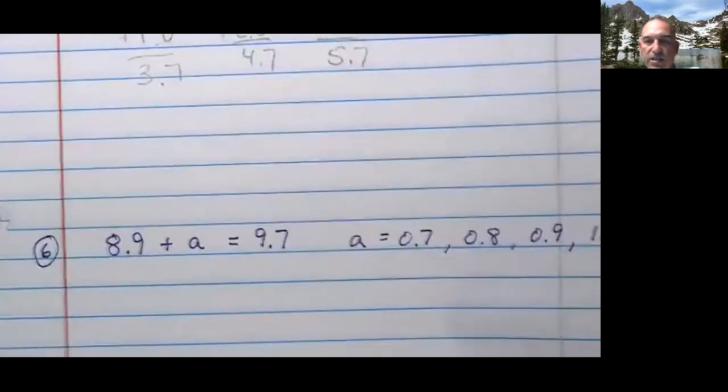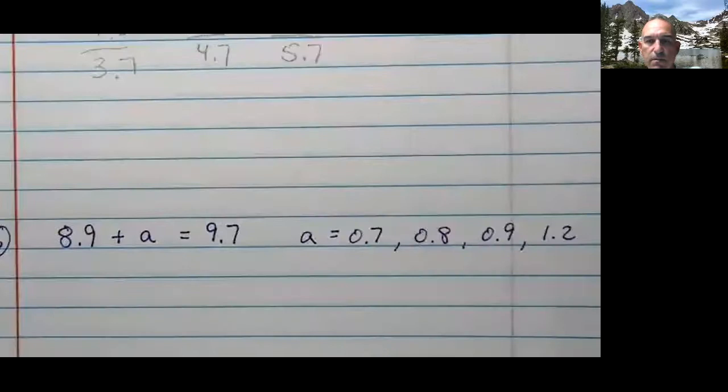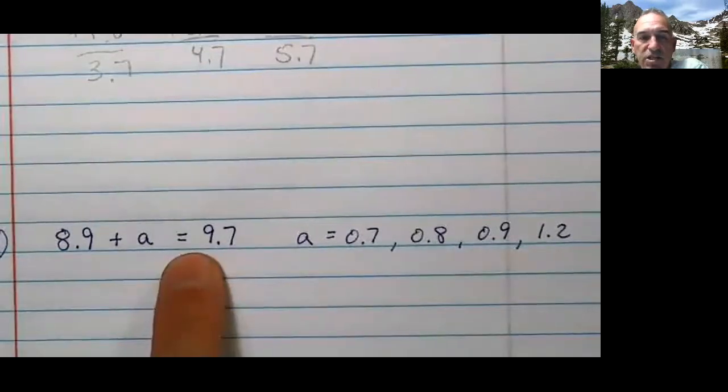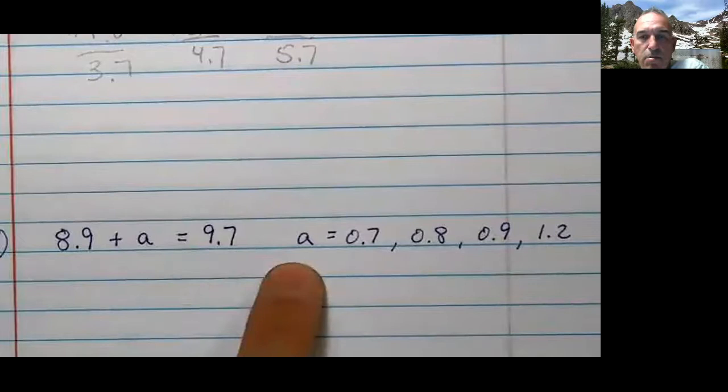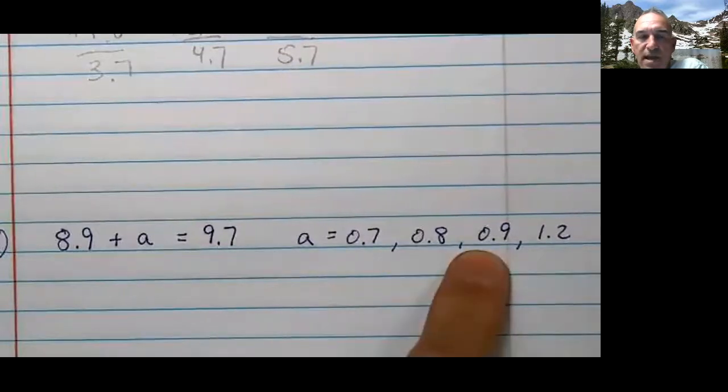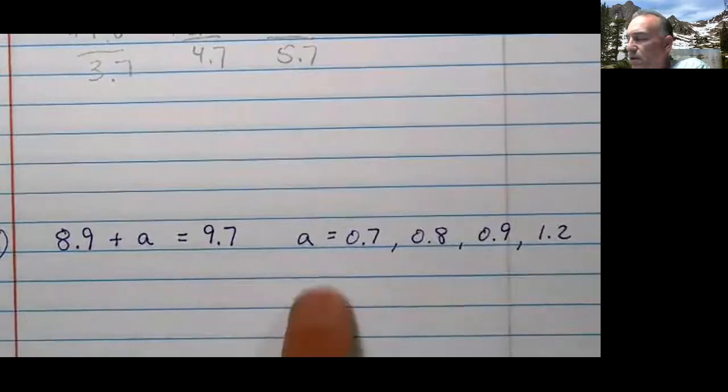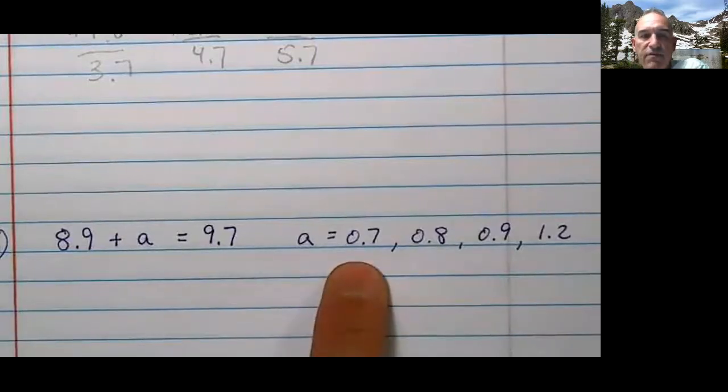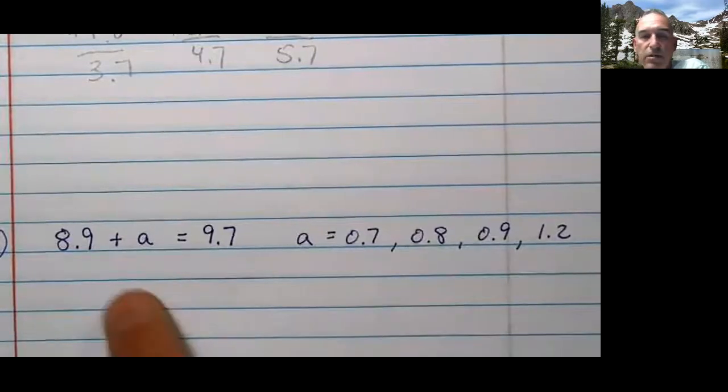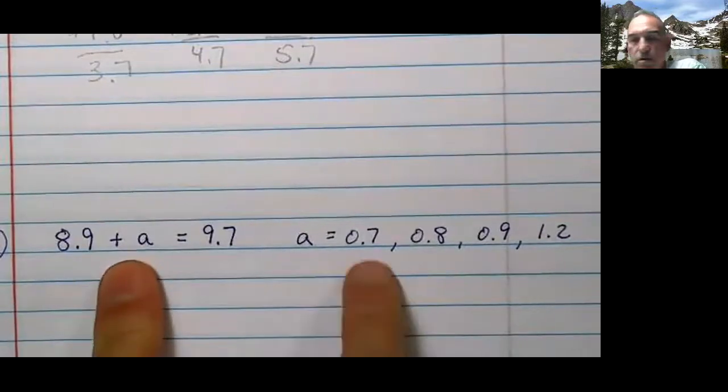Let's do another one. Here's number 6. Let's look at this one. Oh, we have an equal sign here. So it must equal. So there's probably only going to be one answer. Right? Again, you're going to substitute these. Is it 0.7? You go, I'm not sure.